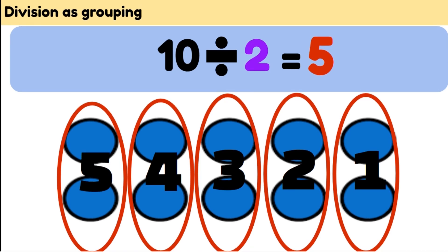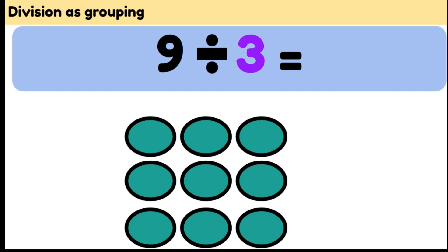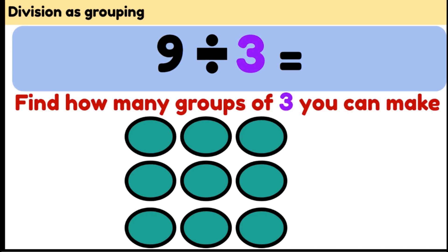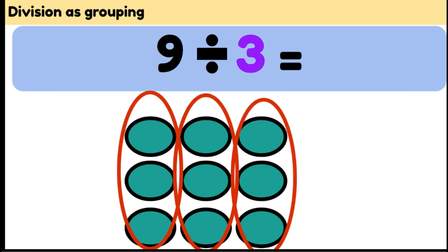Let's try another problem now. We've got 9 divided by 3 and we're going to be using grouping. We need to figure out how many groups of 3 we can make from these 9 lollies. First of all, we're going to make our groups. 1 group of 3, 2 groups of 3 and 3 groups of 3.